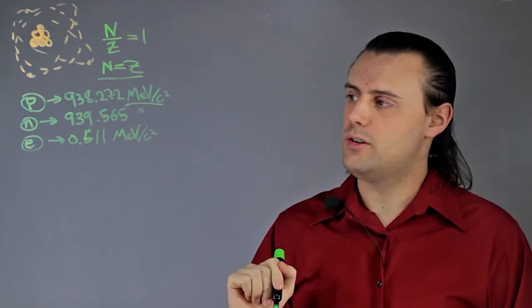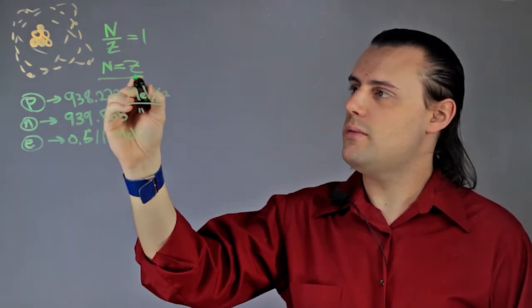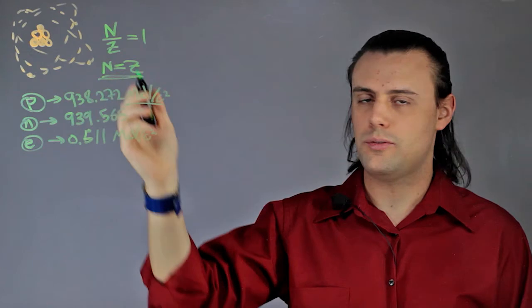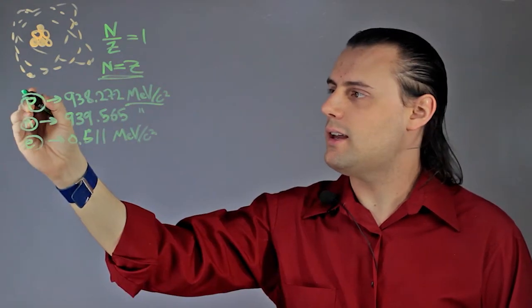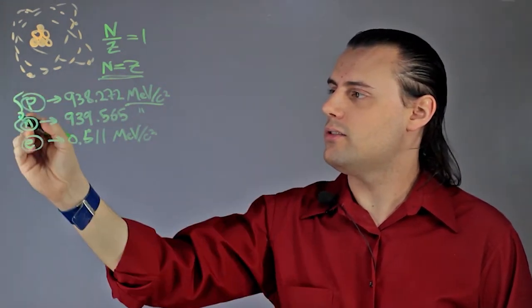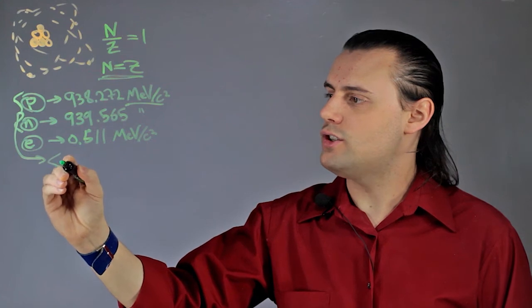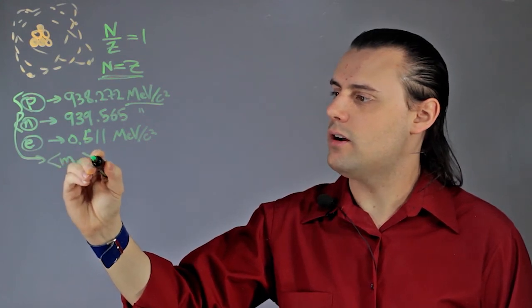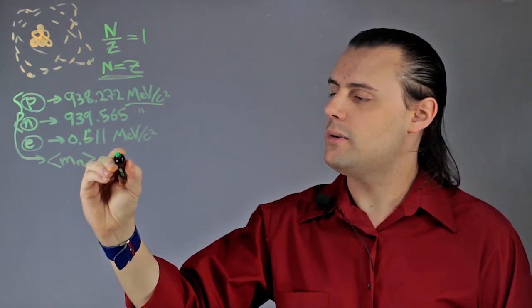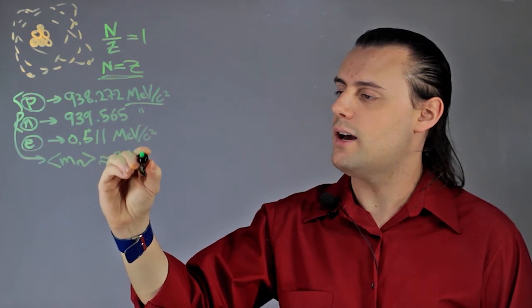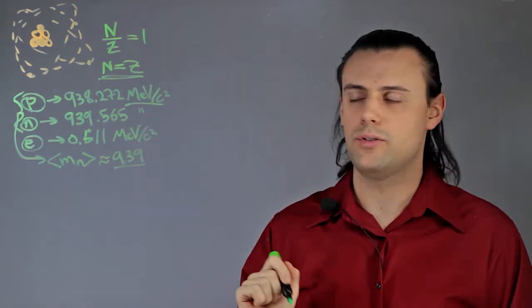The next thing I'm going to do is, if I assume that I have as many neutrons as protons, I'm just going to take an average of these two masses. So, the average mass of a nucleon is going to be approximately 939 mega electron volts per speed of light squared.